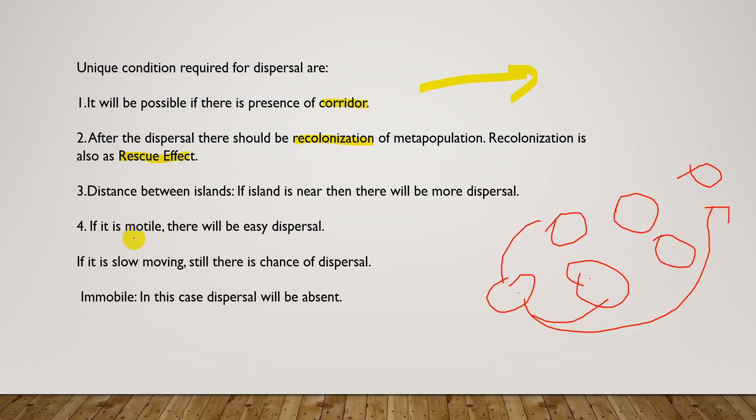If the population is motile, there will be easy dispersal. Here we can take the example of pollination also. If the pollen cannot be displaced by any agents like wind or water, then they are immobile. In this condition, they cannot disperse from their own island to another. Similar is the case with animals - if it is slow moving, there is still chance of dispersal, but if immobile, dispersal will be absent.